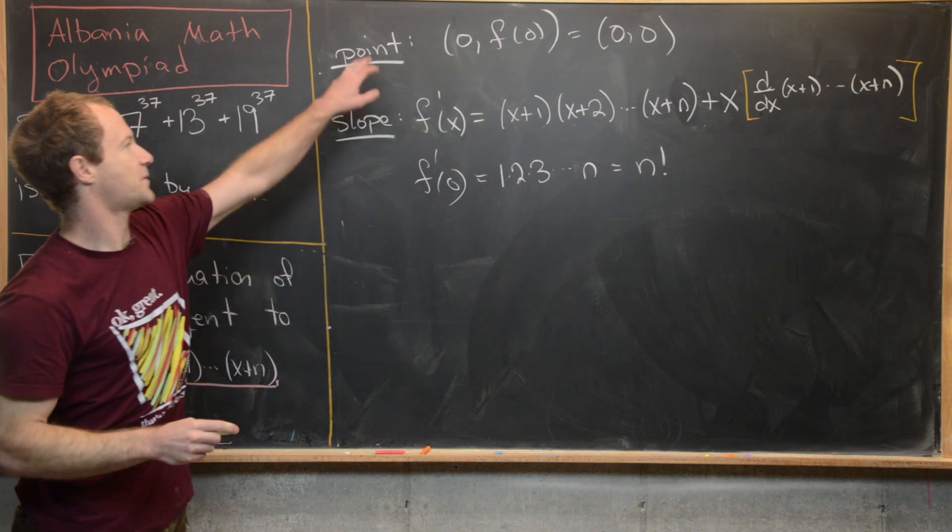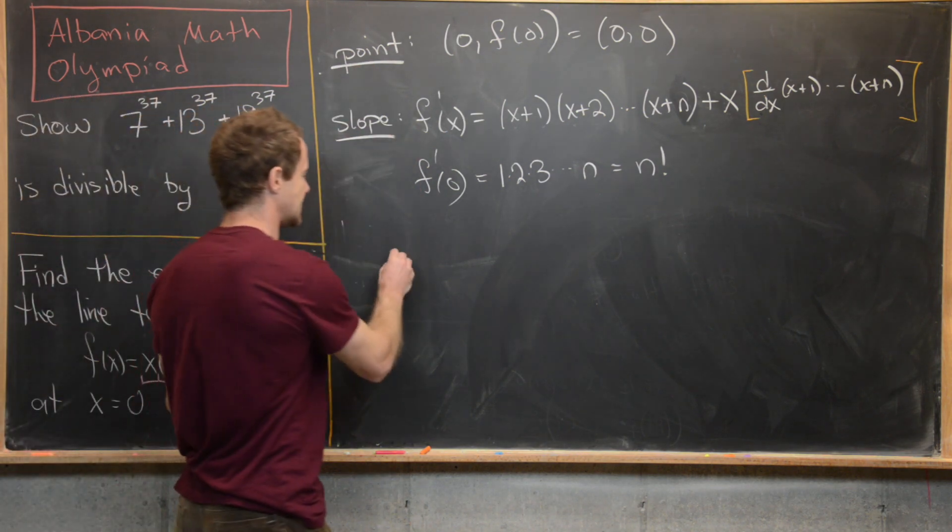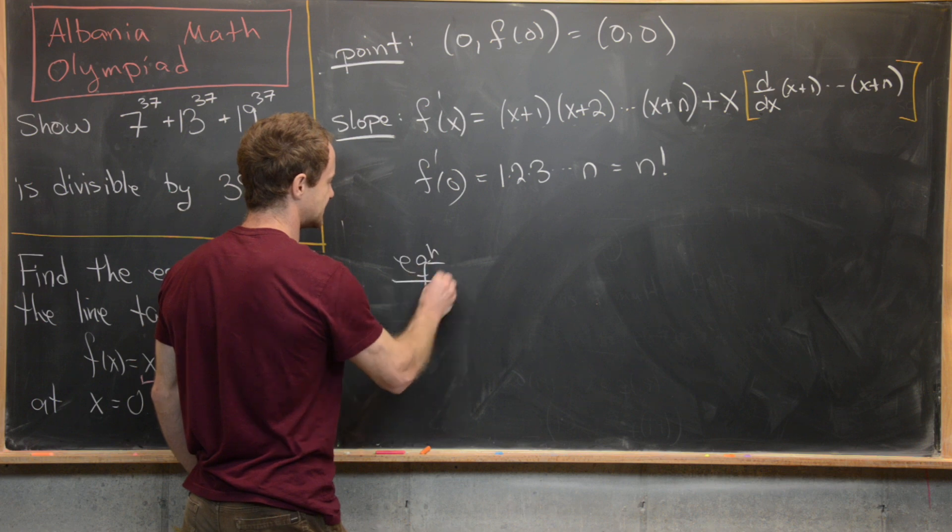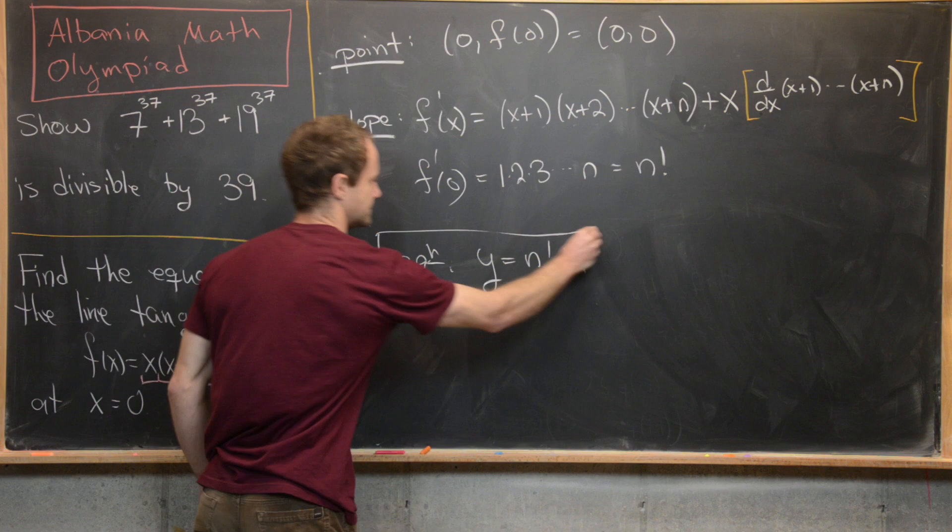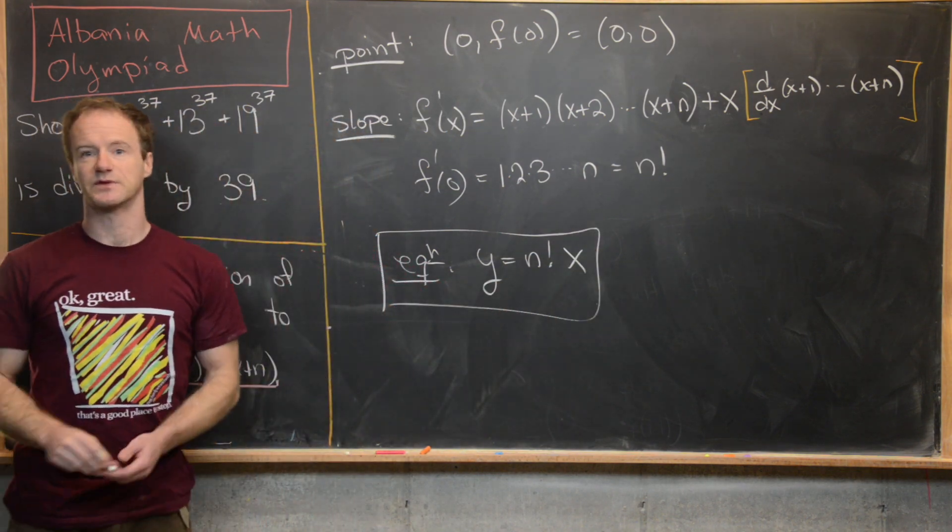So now that we've got the slope, and we've got a point, we can easily write the equation of this tangent line, we have its y equals n factorial times x. And that's a good place to stop.